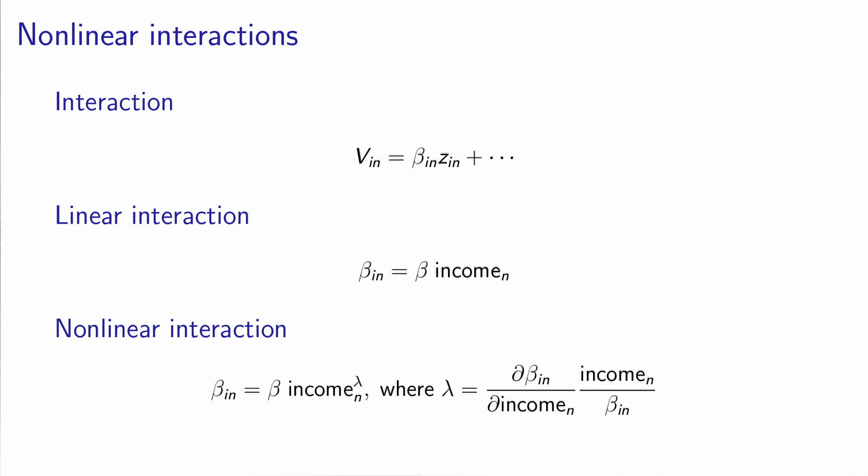But we can do it now in a nonlinear way, using the same idea that was used for the Box-Cox transform. We can say, let's include an additional parameter λ. And let's define now βin to be equal to β times income, but raised to the power λ.